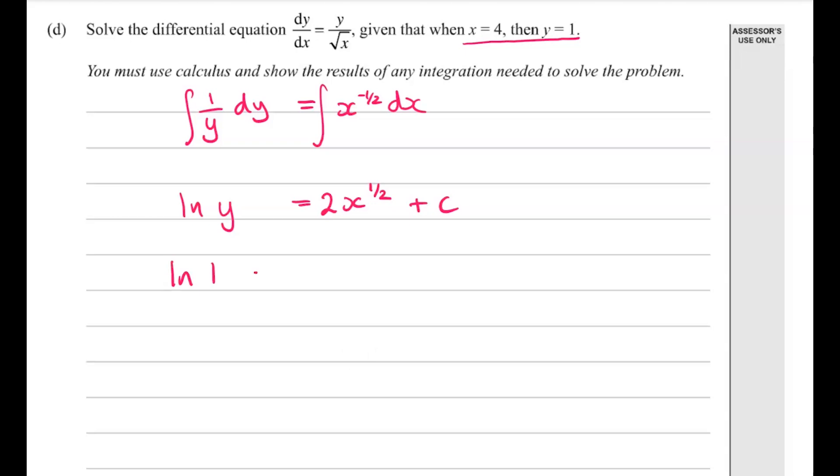So then we can use our values here. So ln of 1 equals 2 root x, which is 2 root 2 in this case, plus c. So c is equal to, actually just go back, my brain worked faster than my hands then, 2 root 4. x is 4 there. So 2 times the square root of 4, which is 2. So that would be 4. And ln of 1 is 0. So therefore, c is equal to negative 4.